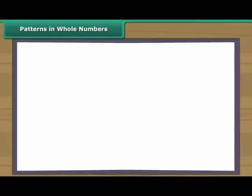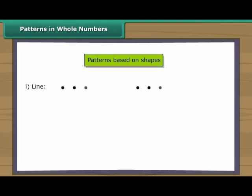Patterns in whole numbers. Numbers can be arranged in some elementary shapes using dots. The shape could be a line, square, rectangle, triangle. Every number can be arranged as a line. For example...